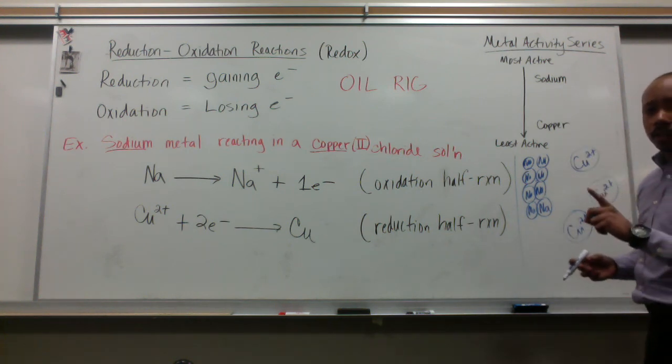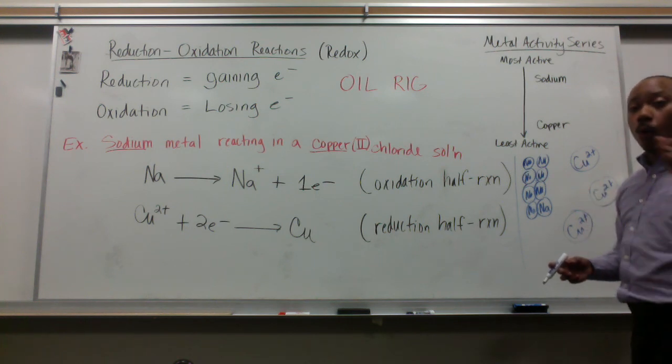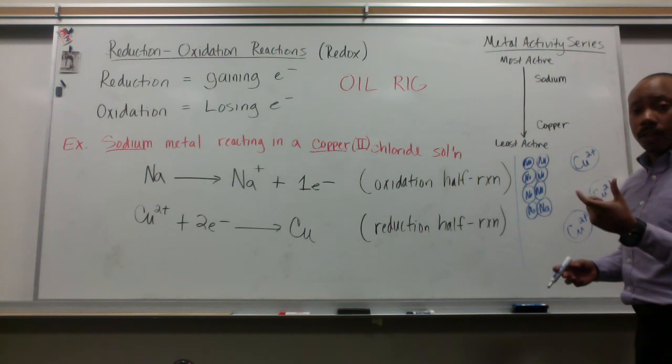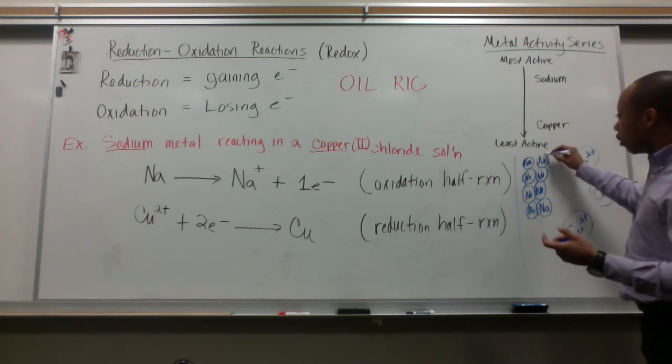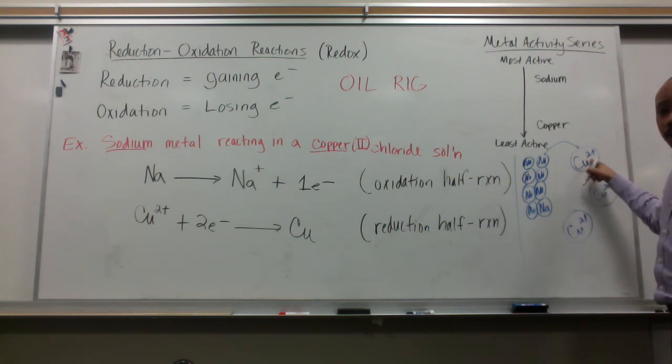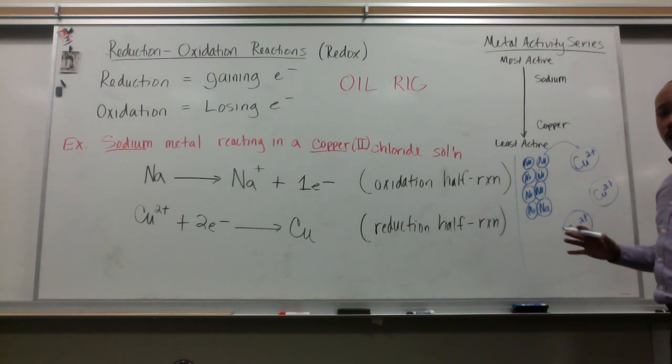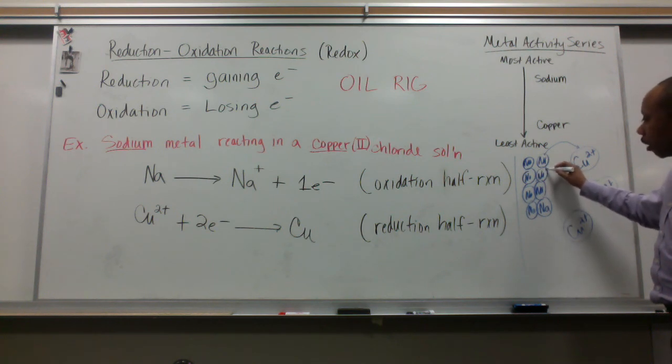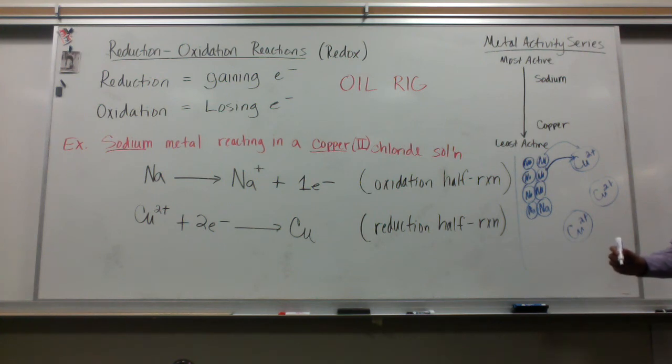That sodium has one valence electron. It's going to lose one valence electron to achieve an octet. When it loses that one valence electron, it's going to lose it to this copper 2 plus ion. But that doesn't satisfy this copper 2 plus to go back down to its neutral state. Another sodium atom comes along and gives the other one to that copper 2 plus. That's how copper 2 plus gains two electrons. It takes two sodium atoms.